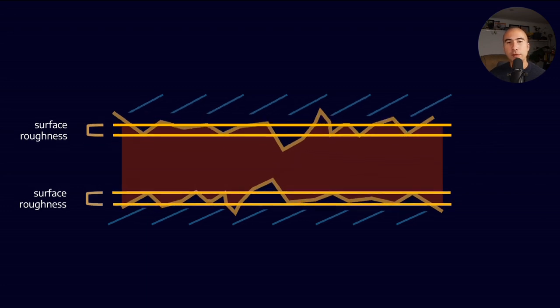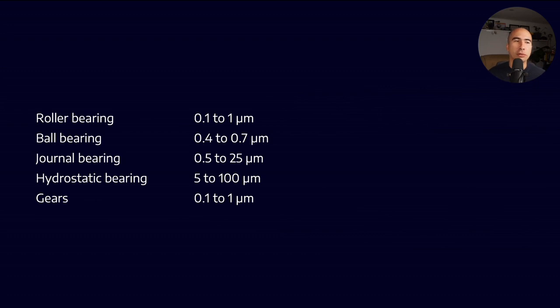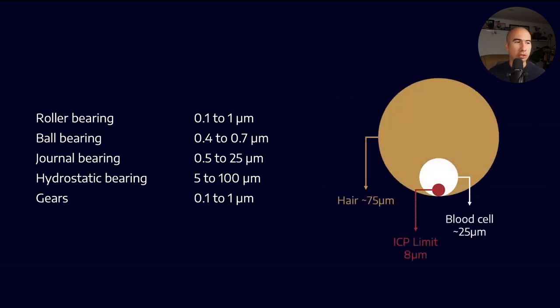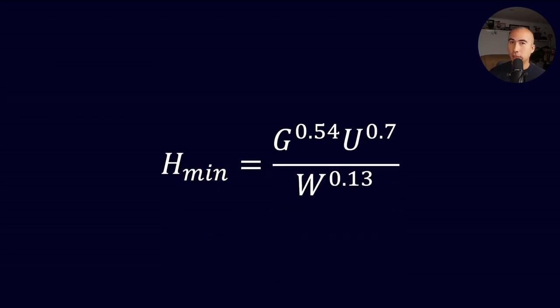The actual film thickness for roller bearings, ball bearings, journal bearings, hydrostatic bearings, and gears is typically on the one micron range. The lubricant film thickness calculation uses H min, the non-dimensionalized minimum film thickness. G comprises material properties and viscosity, U is entrainment velocity, and W gives load. This is the Downson-Higginson minimum oil thickness calculation. You don't need to know it, just that it exists.